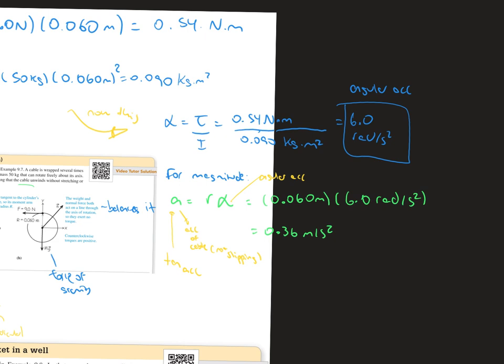Now that we have both the torque and the moment of inertia, we can find the angular acceleration. We would just divide the torque by the moment of inertia, 0.54 newton-meters divided by 0.090 kilograms per meter squared. So the angular acceleration would be 6 radians per second squared.